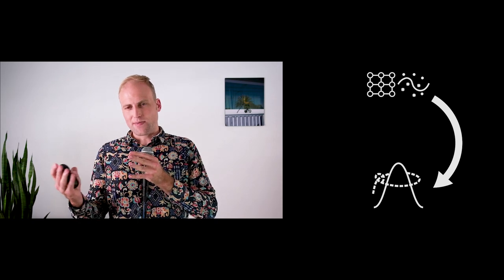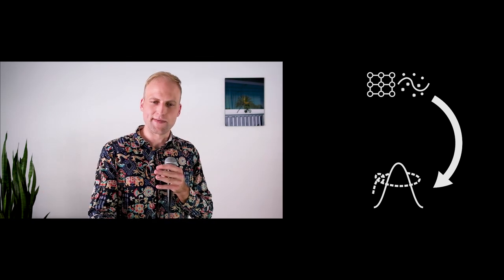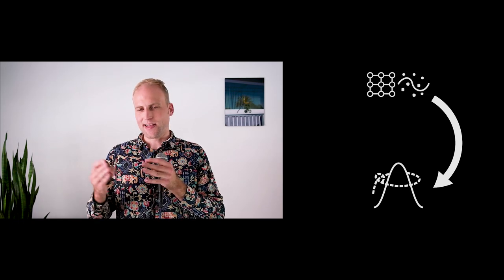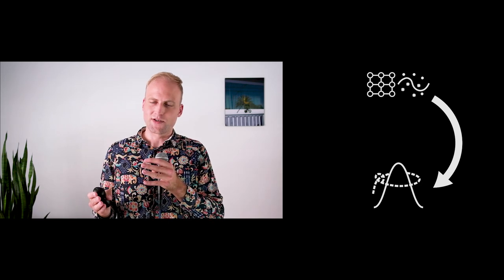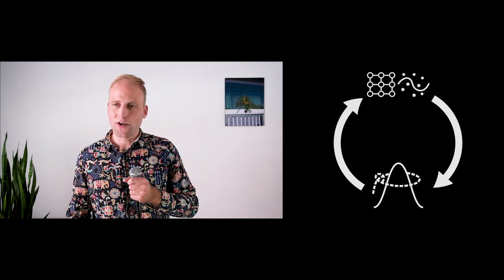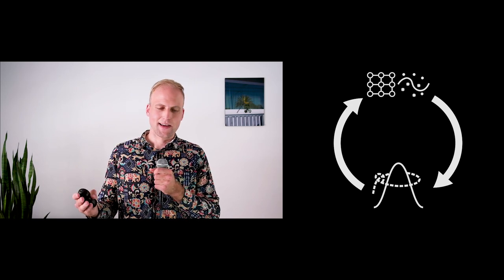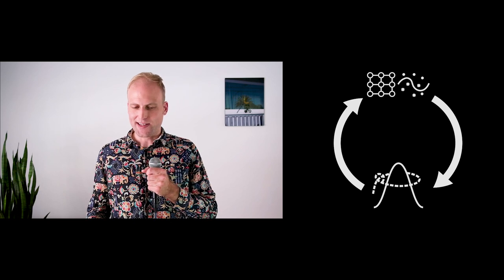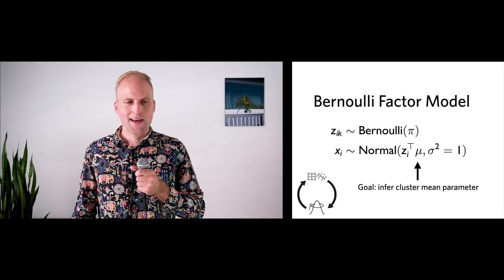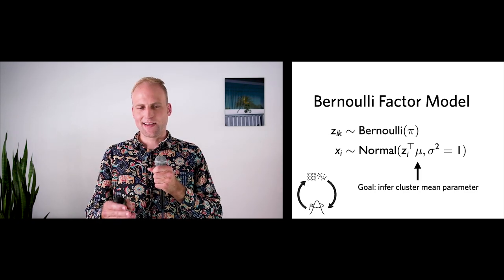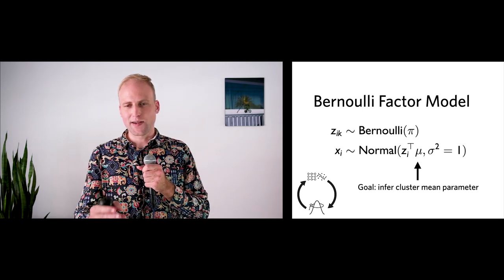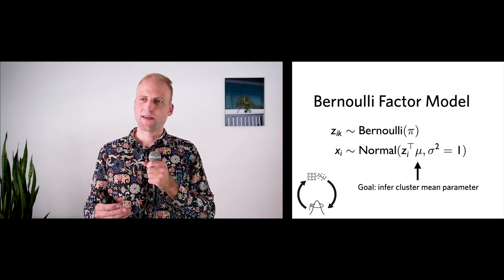How do we take the structure of the probabilistic models themselves and use that knowledge to improve optimization methods? One thing to add is constraints about general statistics of probability distributions — building constraints on the probability distributions to improve accuracy. To understand why constraints might be helpful, let's think about a case where things break: the Bernoulli factor model. In this model we have latent variables Z_ik and data points X_i. The latent variables represent cluster membership, and data points are normally distributed with means given by the inner product between cluster identity latent variables and cluster mean parameters mu.